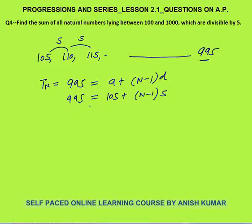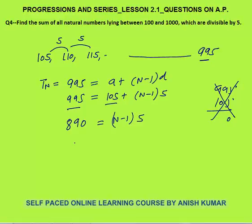Solving: 995 − 105 = (n−1) × 5. Calculate 995 − 105 verbally: 995 − 5 = 990, minus 100 = 890. So (n−1) × 5 = 890, giving n − 1 = 178, therefore n = 179. The number of terms is 179.